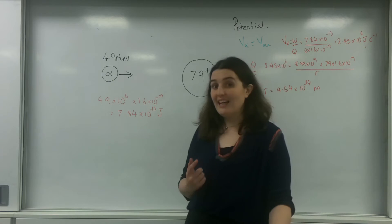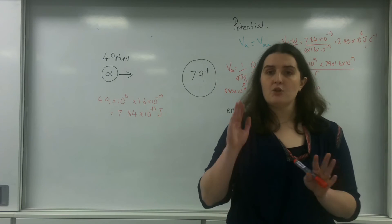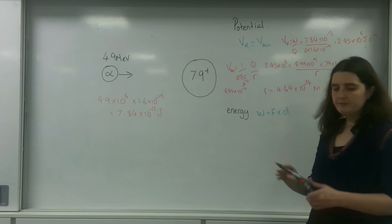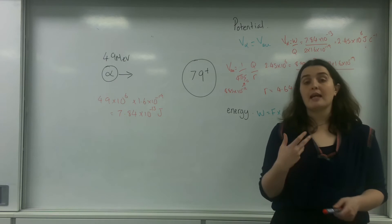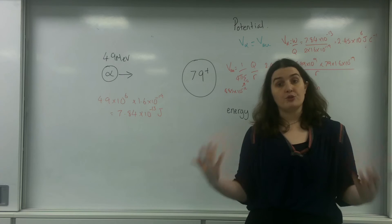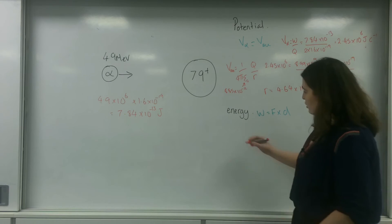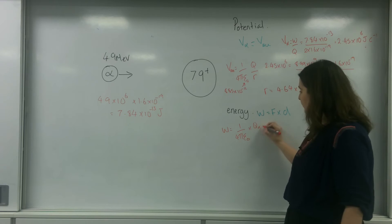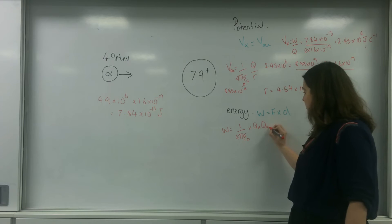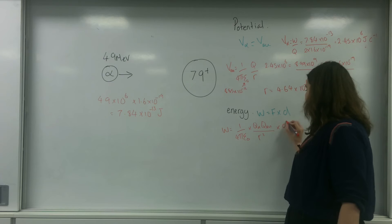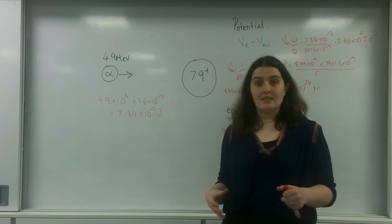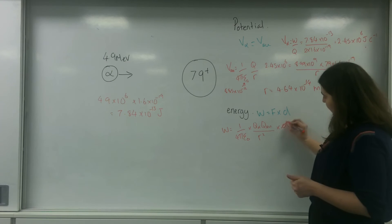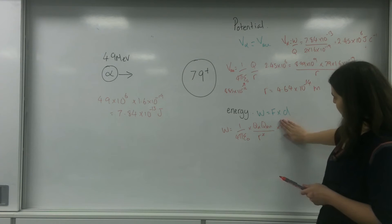The base formula is work done equals force times distance. The force causing repulsion is the electrostatic force — Coulomb's law. So I replace the force with 1 over 4 pi epsilon-0 times Q-alpha times Q-gold over R squared, times by the distance. The distance R squared cancels with the R in the denominator, leaving 1 over 4 pi epsilon-0 times Q-alpha times Q-gold over R.